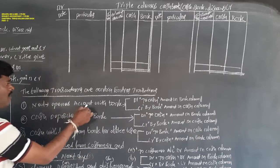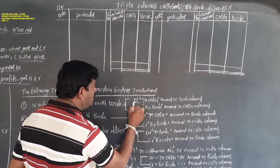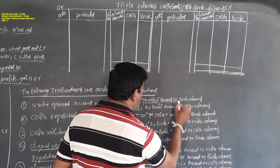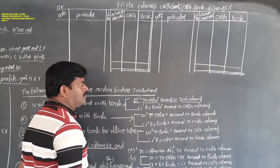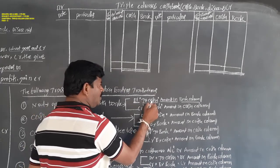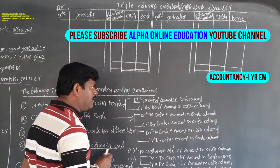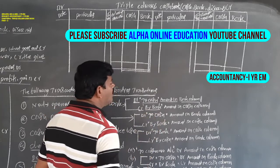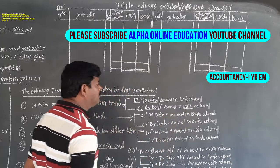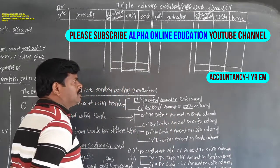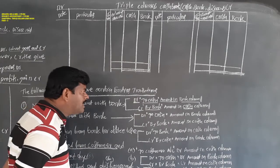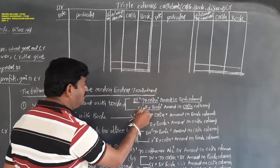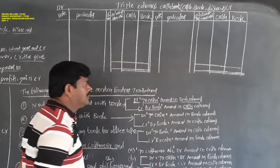For a newly opened account with bank, you must record on the debit side as 'To Cash' with the amount in the bank column. On the credit side on the same date, write 'By Bank' with the amount in the cash column. So the same transaction is recorded on the debit side as well as the credit side — debit side: To Cash, amount in bank column; credit side: amount in cash column.